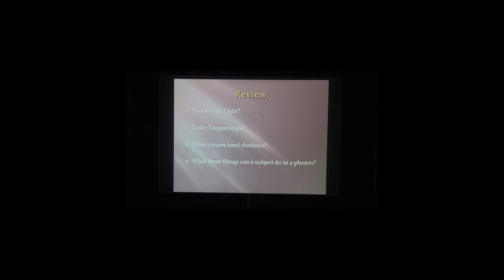Going back to the first part — can we see light? No, it has to be hitting something. Color temperature — the Kelvin scale. Yellows and oranges all the way up to blue. Blue is like 10,000 and the yellows are down to like 2,500. Fluorescent is about 3,300. Sun or daylight balance is around 5,500 to 5,600.